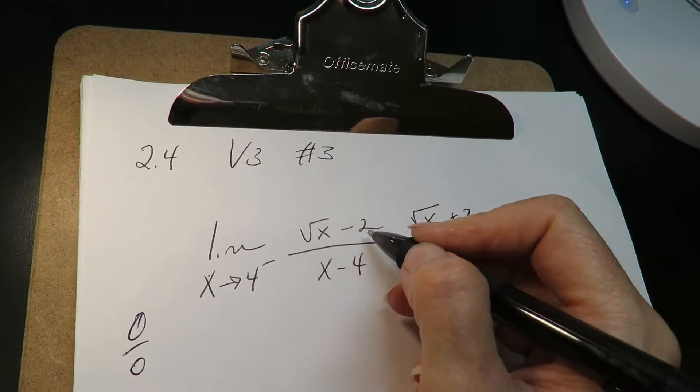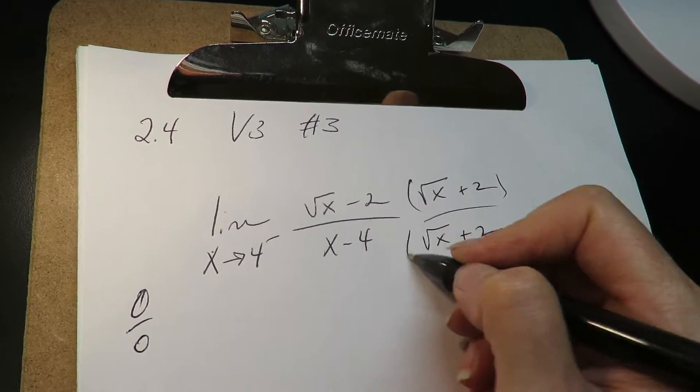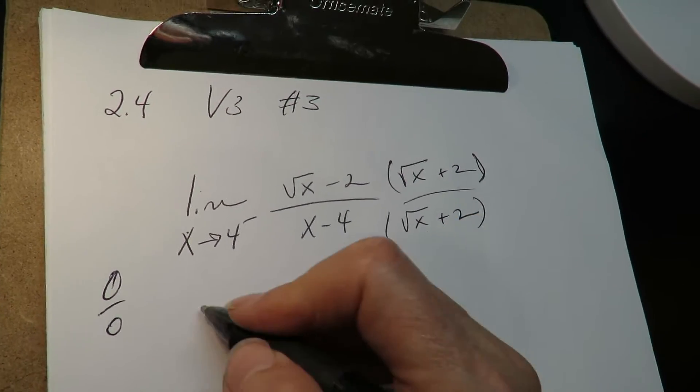So the conjugate of radical x minus 2 is radical x plus 2. This is the rationalization technique.